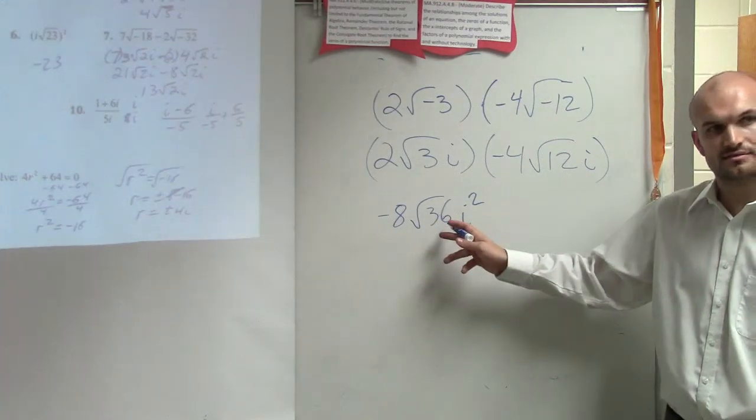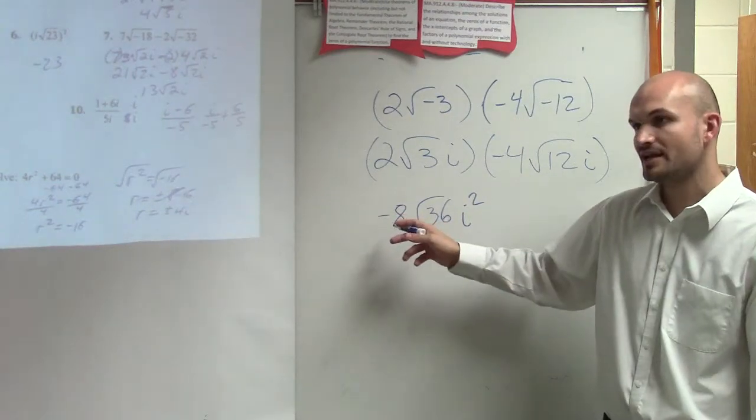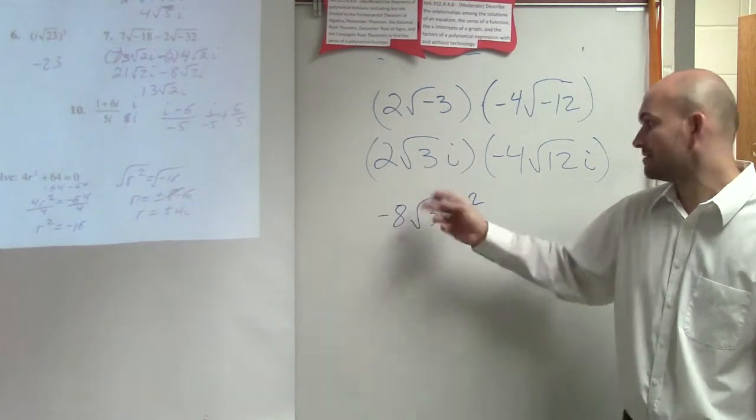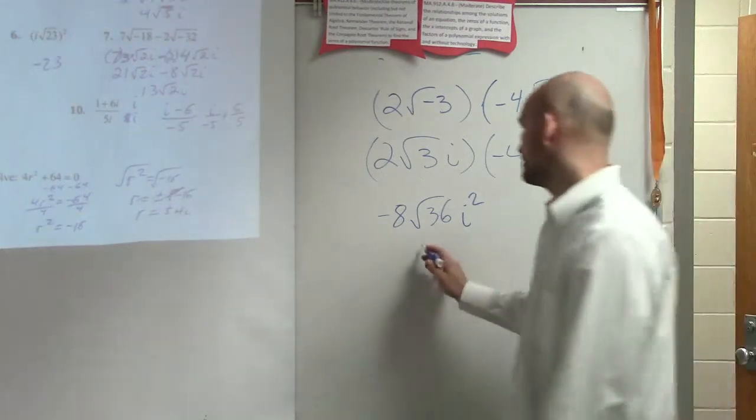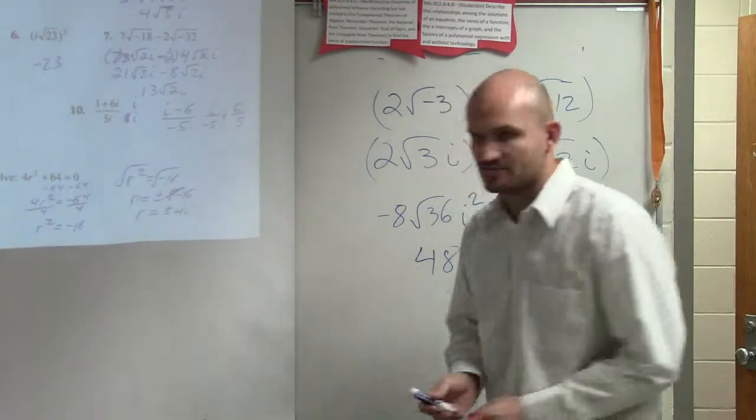Square root of 36 is 6. 6 times negative 8 is negative 48. Negative 48 times i squared, which is negative 1. Positive 48.